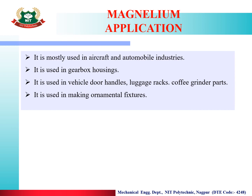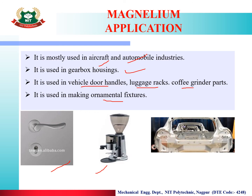Applications of Magnelium: it is widely used in aircraft and automobile industries. It is used for gearbox housings, vehicle door handles, luggage racks, coffee grinder parts, and ornaments and jewellery. As shown in the diagram — handles, coffee grinders and automobile bodies are made using Magnelium.